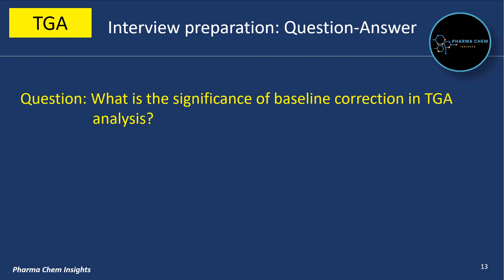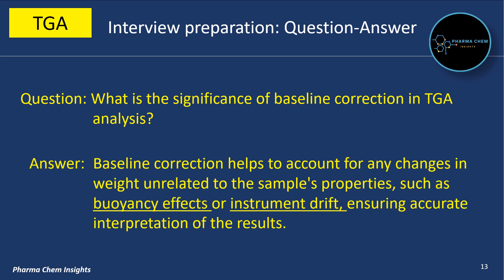What is the significance of baseline correction in thermogravimetric analysis? Baseline correction helps to account for any changes in weight unrelated to the sample's properties, such as buoyancy effects or instrument drift, ensuring accurate interpretation of the results.